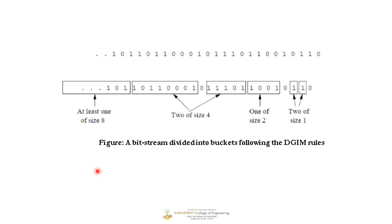Let's understand this with an example. Here is a given data stream divided into buckets. We can have buckets of size 1, 2, 4, and 8. The size of a bucket equals the number of 1s inside it. So this bucket has size 1 because it has one single 1, this next bucket also has size 1, this bucket has size 2 because it has two 1s, and this bucket has size 4 because it has four 1s.